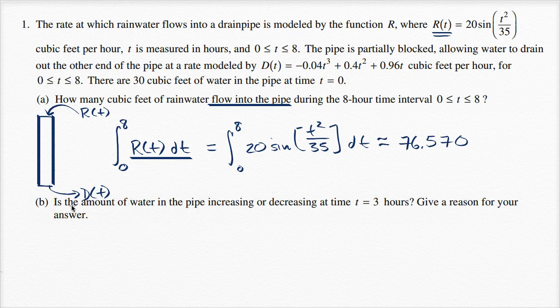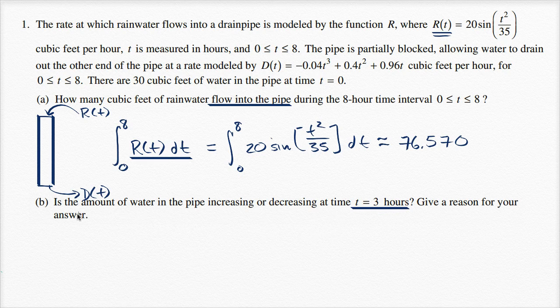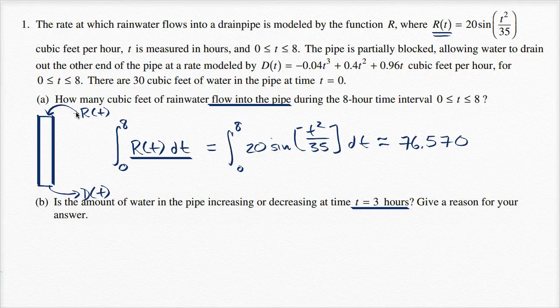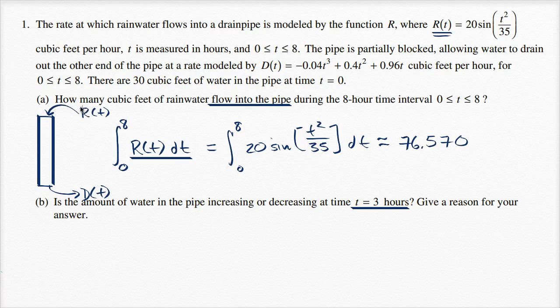Now let's tackle the next part. Is the amount of water in the pipe increasing or decreasing at time t equals three hours? Give a reason for your answer. Well, what would make it increasing? Well, if the rate at which things are going in is larger than the rate of things going out, then the amount of water would be increasing. But if it's the other way around, if we're draining faster at t equals three, then things are flowing into the pipe, then the amount of water would be decreasing.